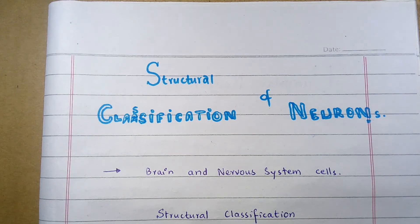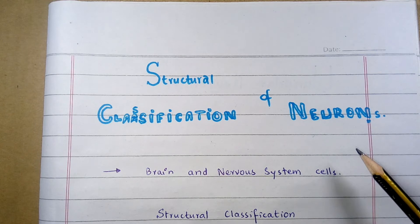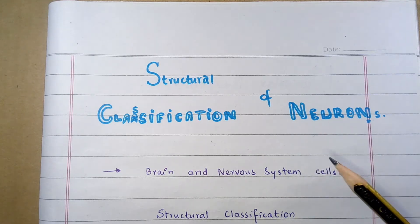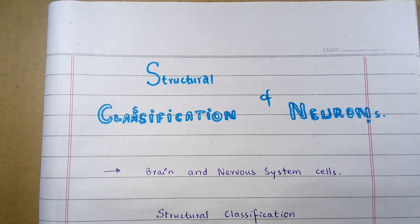Assalamu alaikum students, welcome to my channel. In this video I am going to elaborate the structural classification of neurons. Neurons are the cells that make up the brain and nervous system. They are the functional units used to send and receive signals to control the different body functions. They are the structural and functional unit of the nervous system.